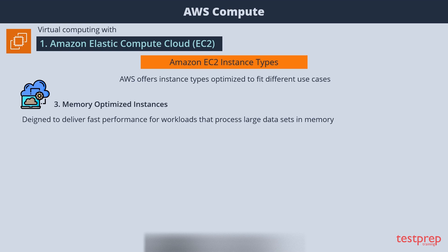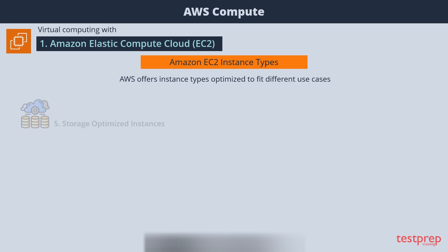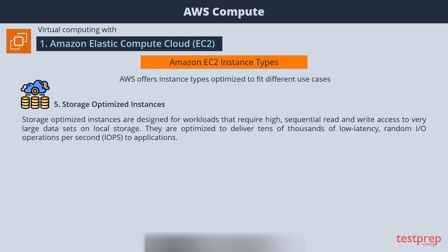Fourth, accelerated computing instances use hardware accelerators or coprocessors to perform functions such as floating-point calculations, graphics processing, or data pattern matching more efficiently. Fifth, storage optimized instances are designed for workloads that require high sequential read and write access to very large data sets on local storage. They are optimized to deliver tens of thousands of low-latency random I/O operations per second to applications.